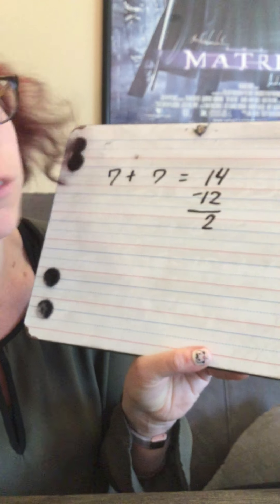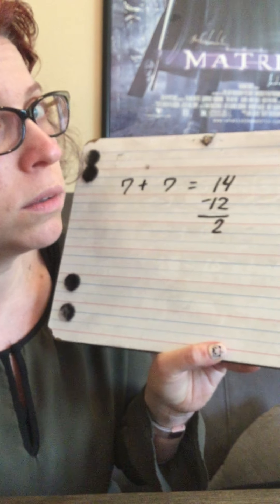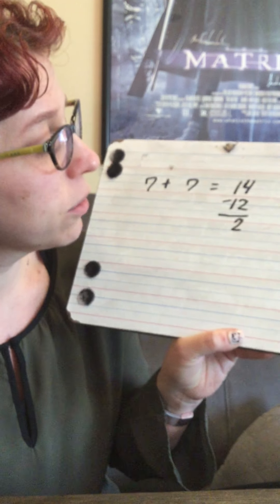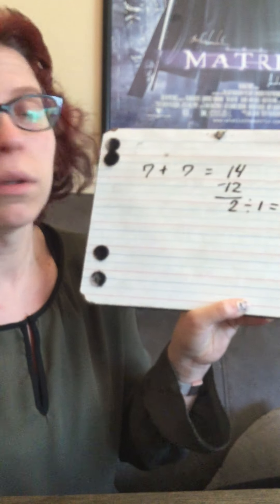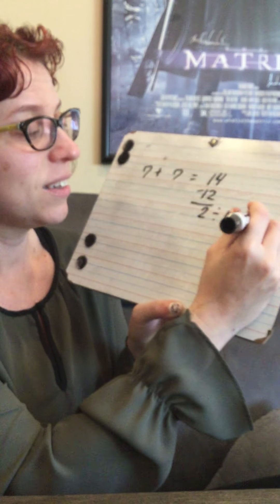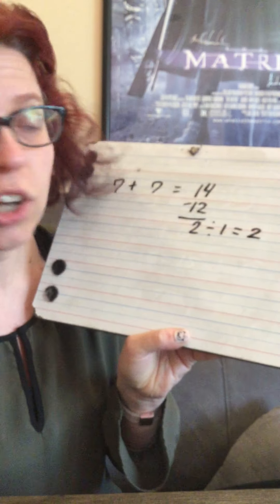So seven plus seven is fourteen. Then we know that they bought a movie for twelve dollars, so fourteen minus twelve is two. If they had containers of fruit salad at one dollar, how many containers could they get? Two divided by one is two. They could each have one container of fruit salad.